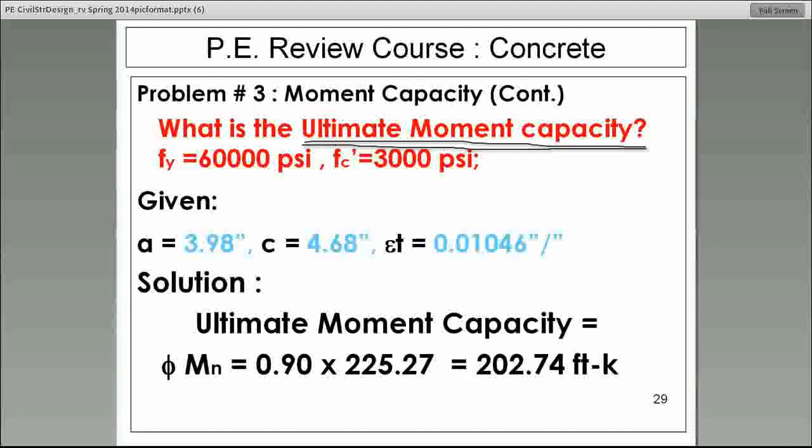So the theoretical ultimate moment is what the material in the cross section can provide us. However, to bring in some factors of safety, the designers would like to reduce the exposure of the building to the amount of load. So instead of allowing the building or the member to be exposed to the theoretical ultimate moment, or the nominal moment as we called it, they calculate what they call the ultimate moment capacity and use that in their equations.